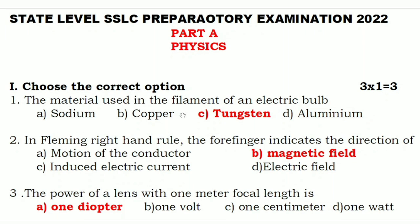Second question: in Fleming's Right Hand Rule, the four fingers indicate the direction of — Option A: motion of the conductor, Option B: magnetic field, Option C: induced electric current, Option D: electric field. In Fleming's Right Hand Rule, the four fingers always indicate the magnetic field, so Option B — magnetic field — is the correct answer.